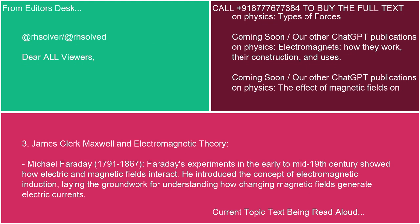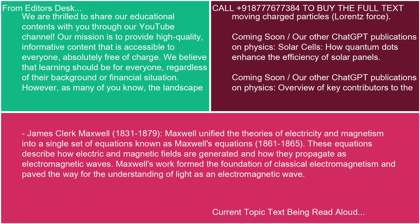3. James Clerk Maxwell and Electromagnetic Theory. Michael Faraday (1791–1867): Faraday's experiments in the early to mid-19th century showed how electric and magnetic fields interact. He introduced the concept of electromagnetic induction, laying the groundwork for understanding how changing magnetic fields generate electric currents. James Clerk Maxwell (1831–1879) unified the theories of electricity and magnetism into a single set of equations known as Maxwell's equations (1861–1865). These equations describe how electric and magnetic fields are generated and how they propagate as electromagnetic waves. Maxwell's work formed the foundation of classical electromagnetism and paved the way for the understanding of light as an electromagnetic wave.